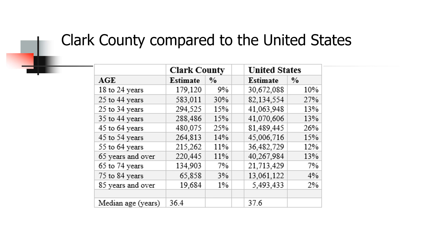Clark County compared to the United States: contrary to popular belief, the average age of people living in Clark County is not older than the United States — this is not a retirement community. Nationally, 13% of the population is over the age of 65, but here in Clark County it's only 11%. There are also fewer 75 to 84-year-olds and fewer 85-year-olds and over on a percentage basis. The median age in Clark County is 1.4 years younger than that of the total United States.